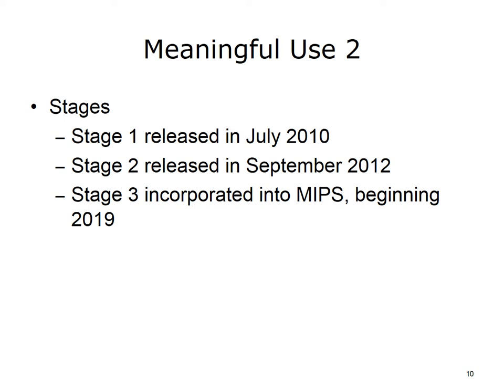The same process was done to arrive at the final Stage 2 rules, released in September 2012 and finalized in 2014. In the Stage 1 proposed rule, five clinical decision support rules were expected, but in the final recommendation only one was required. The Stage 2 final rules do require five clinical decision support rules, and some criteria that were optional in Stage 1 are now required in Stage 2.